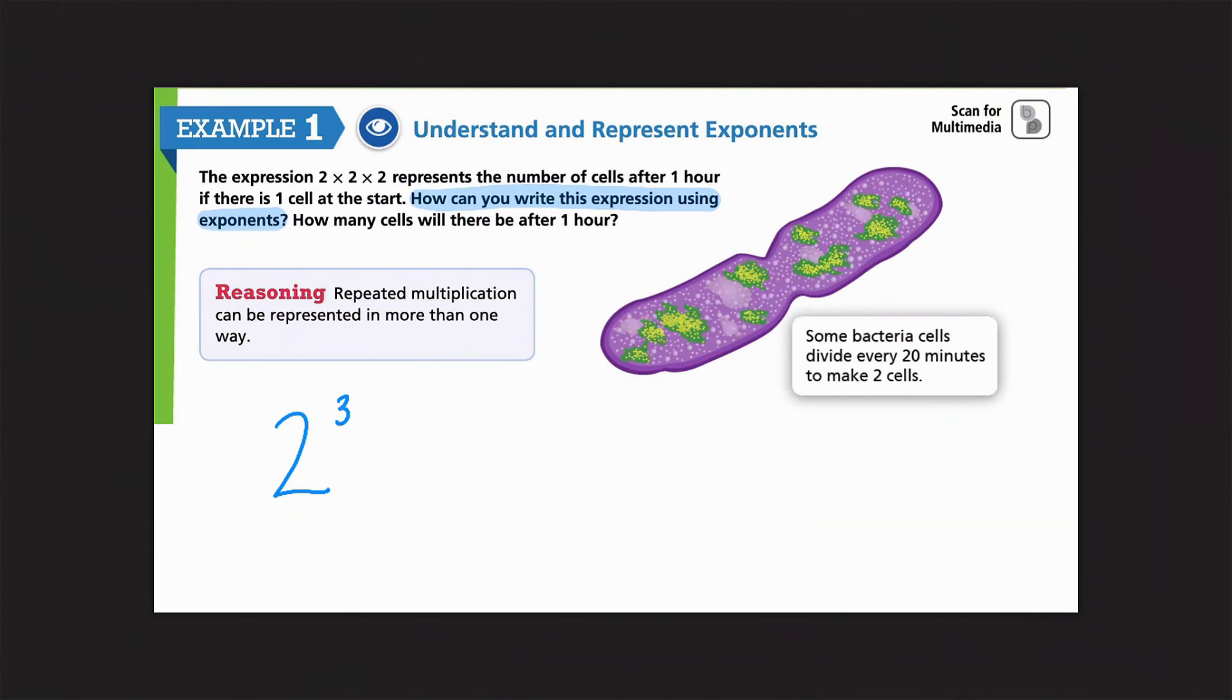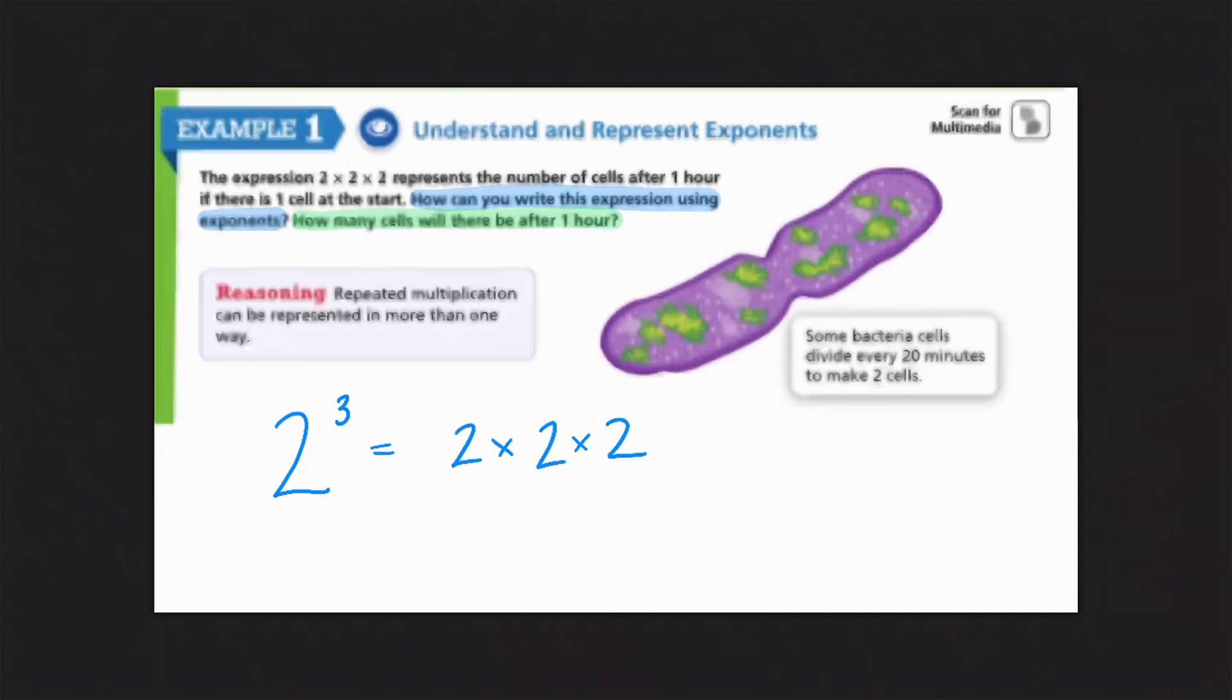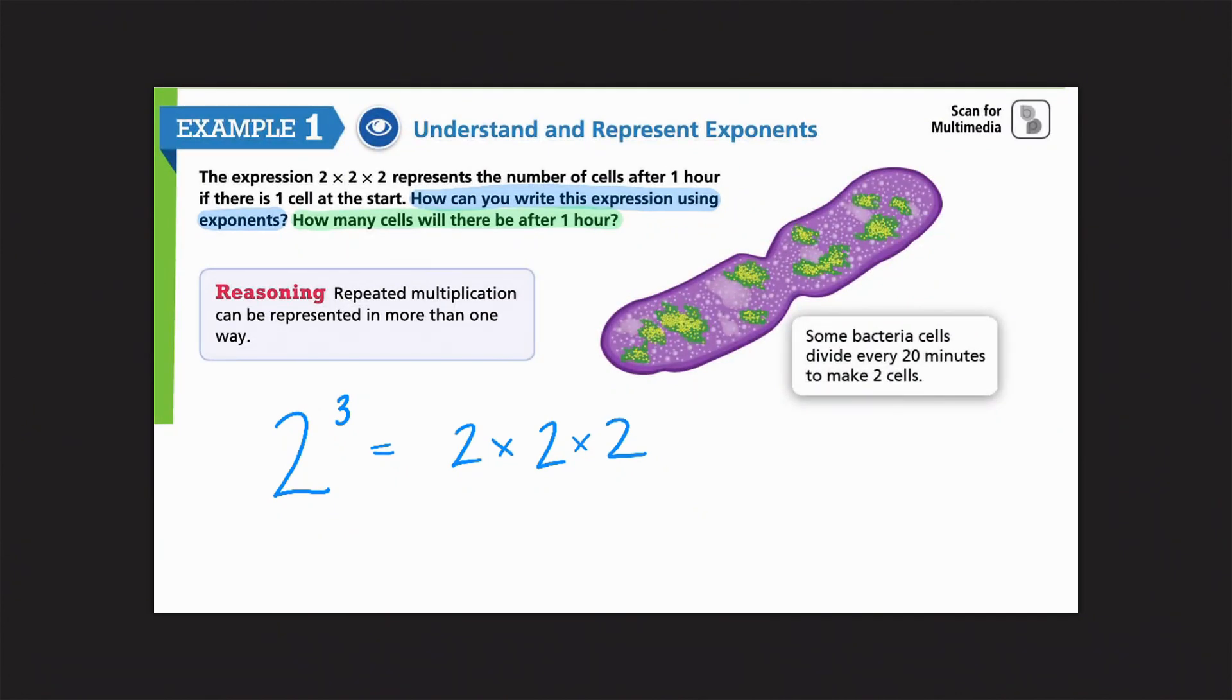And then the second question that it asks us is, how many cells will there be after one hour? So, now we can actually go ahead and solve it. So, 2 to the third power is the same as 2 times 2 times 2. Okay? So, what you're going to do, it's not 2 times 3. A lot of people make the mistake of saying, well, it's 2 times 3 and that's 6. But that's not right. What we want to do is make sure that we always expand it out so that we can use each factor separately.